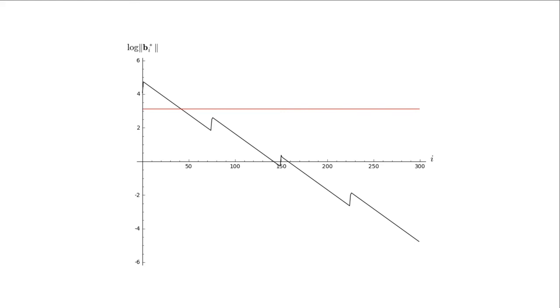Now, if we were to use larger blocks than 75, for example, let's say 100, then we'd only have three blocks. But then the red line would actually be lower. So the output would actually be better. The first vector would be shorter in this case. But then each of the oracle calls would be much more expensive. So that's a typical tradeoff that's provided by block reduction. It's usually controlled by the size of these blocks.